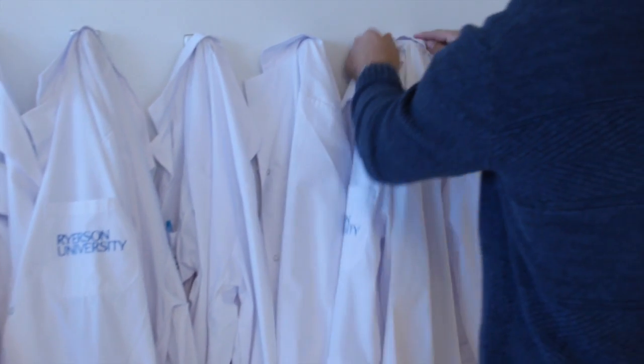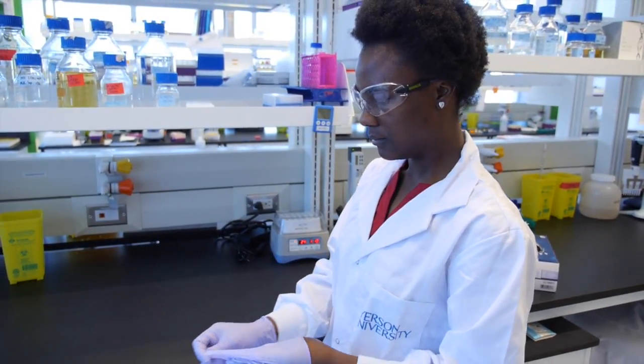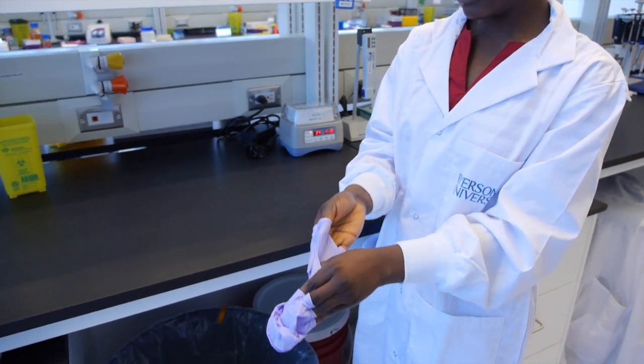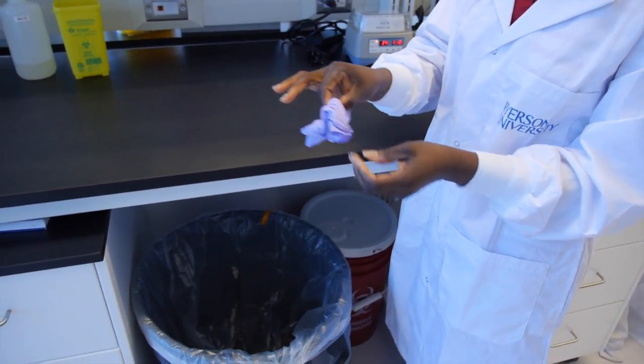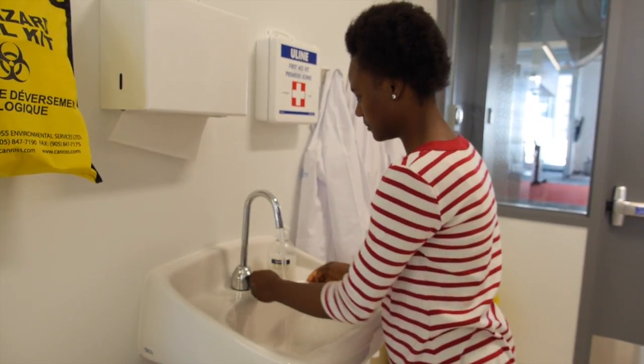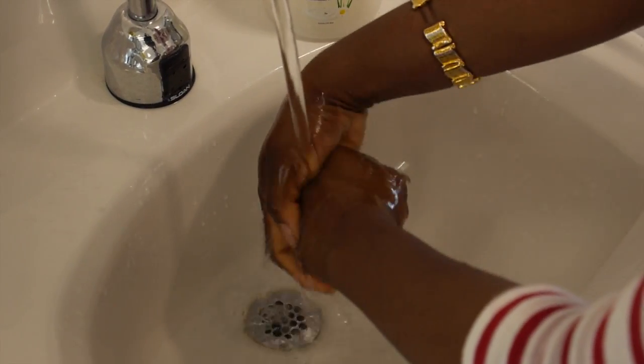Remove your lab coat and other personal protective equipment. When removing your gloves, do so properly to avoid any bare skin contact with the surface of the gloves. Properly wash your hands near the lab exit. Ideally, this sink will be hands-free operation.